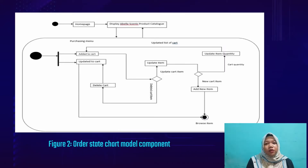Figure 2 shows the order state chart model component. First, the customer can browse through the catalog and view a particular item. Second, the customer can add a new item and update the quantity from the cart. Third, the customer can delete an item from the cart. Fourth, the customer can proceed to payment.